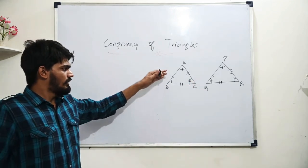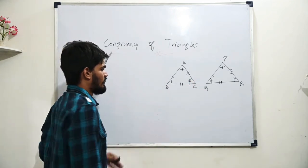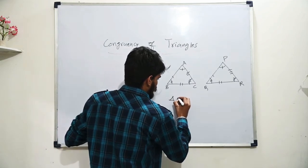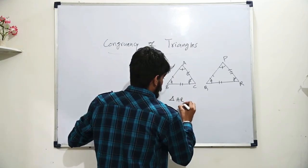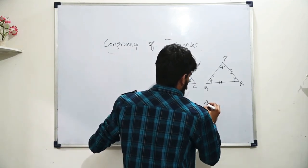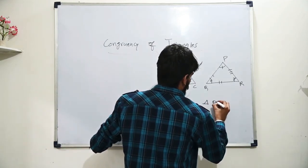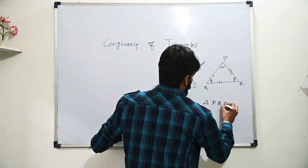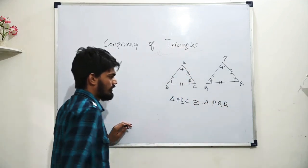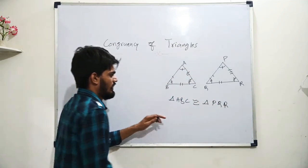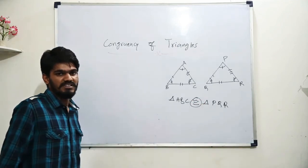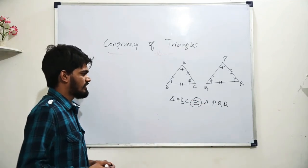So when each corresponds to each, we can say triangle ABC and triangle PQR are congruent to each other. This is the sign to represent congruency.